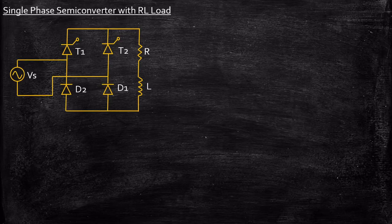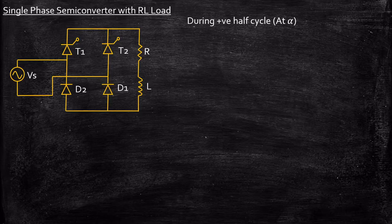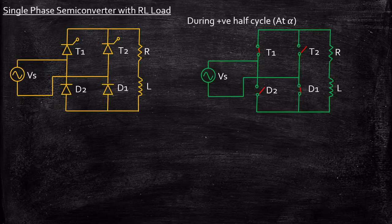Hello everyone. In this video we will be taking a look at single phase semi converter with RL load. This is a circuit diagram of a single phase semi converter with RL load. In order to understand the operation of the circuit, let's see what happens during positive half cycle — that is at instant say alpha when a firing pulse is applied, what happens to the operation of the circuit.